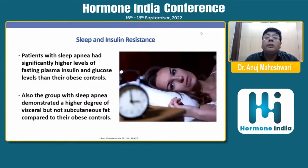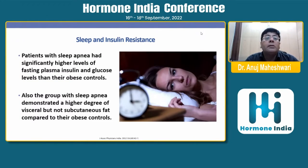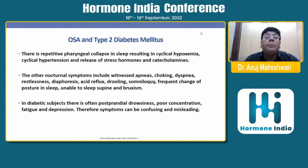Patients with sleep apnea had significantly higher levels of fasting plasma insulin and glucose than their obese controls — even obese individuals without sleep apnea may not have insulin levels as high as those with sleep apnea. The sleep apnea group also demonstrated a higher degree of visceral — but not subcutaneous — fat compared to obese controls. There is repetitive pharyngeal collapse during sleep resulting in cyclical hypoxemia, pulmonary hypertension, and release of stress hormones and catecholamines.